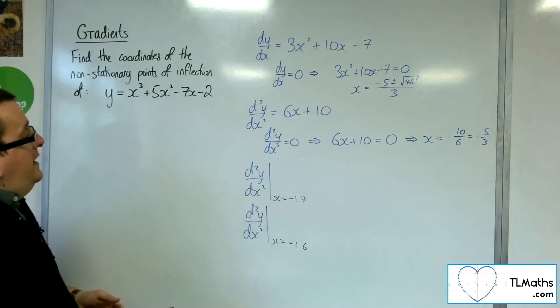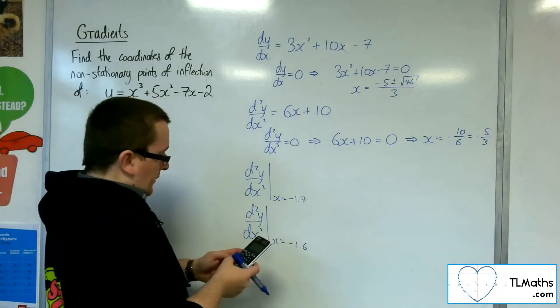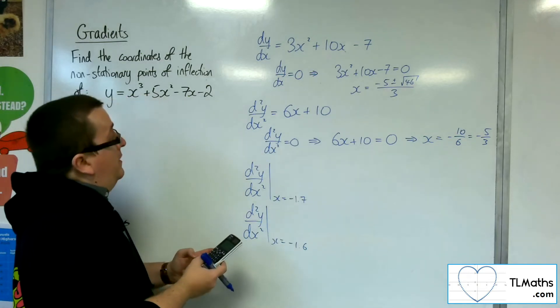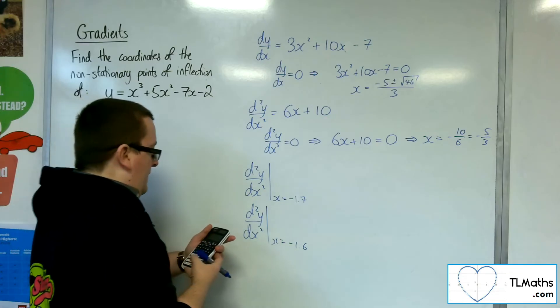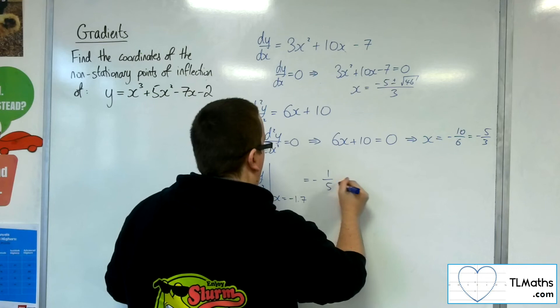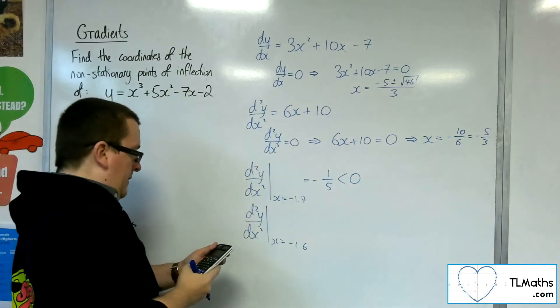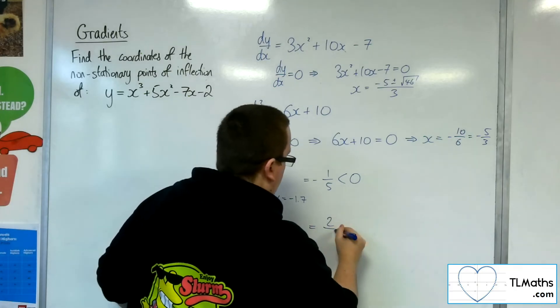Substituting these into the second derivative. We've got 6 lots of minus 1.7 plus 10, and that gets us minus 1 fifth. That's negative. And if I substitute minus 1.6, we get 2 fifths, which is positive.